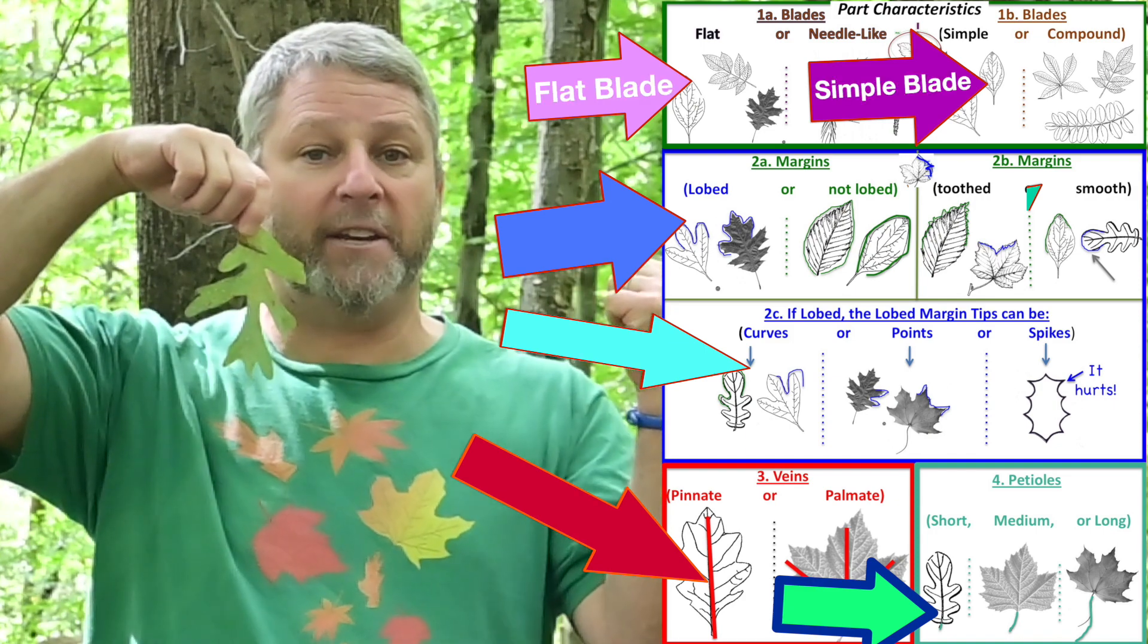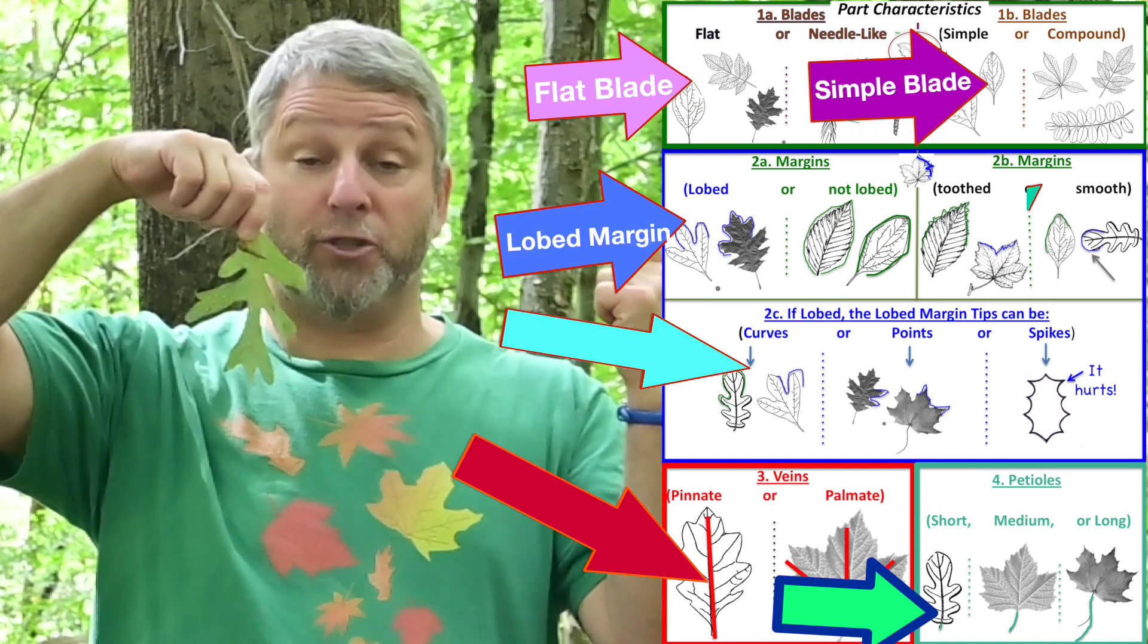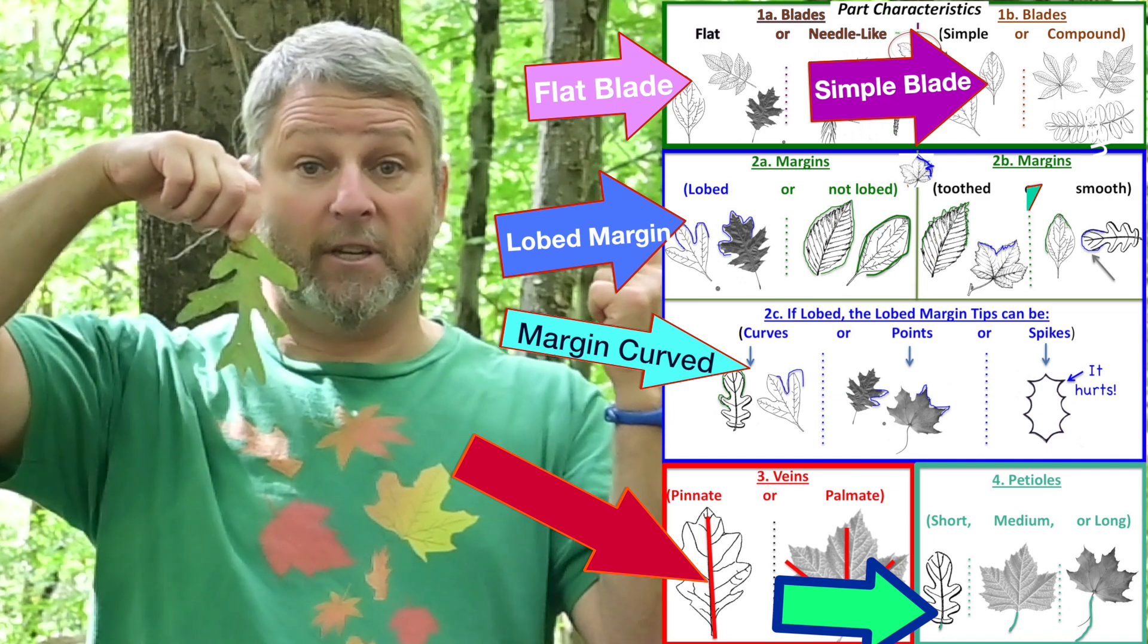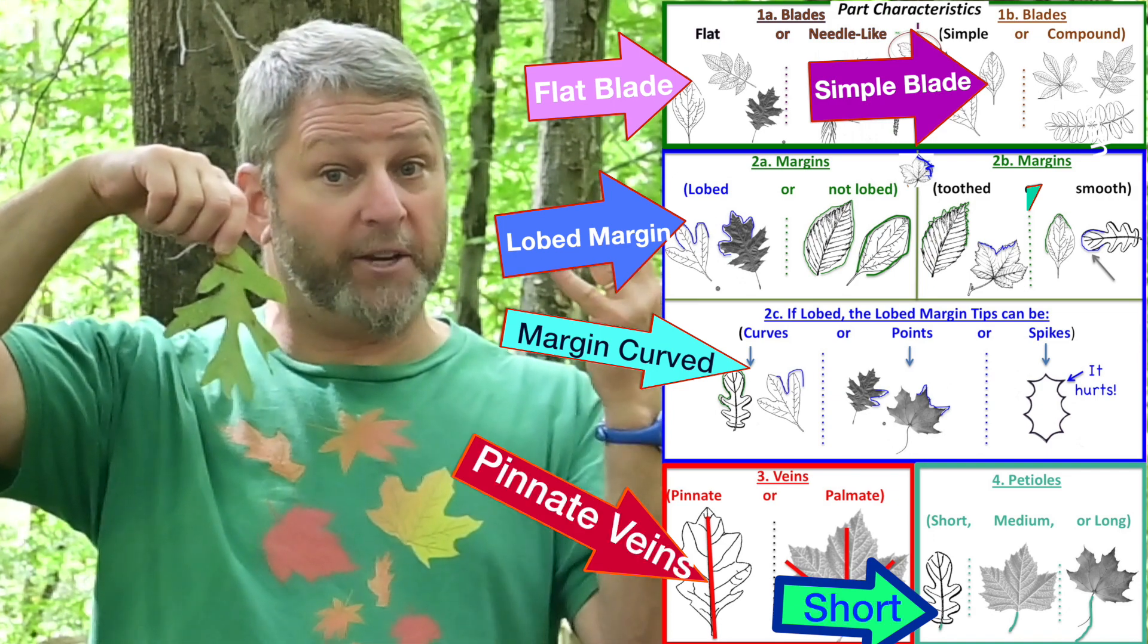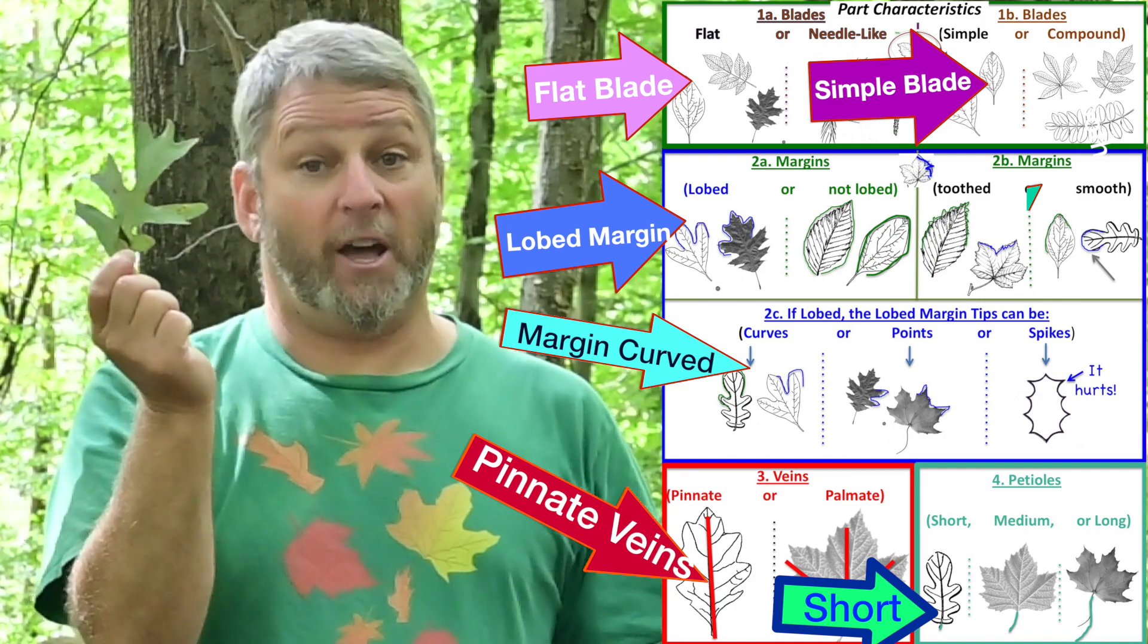Flat, simple blade. Margin lobes, smooth and curves. Pinnate veins, short petiole. That's the description of this leaf.